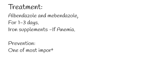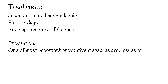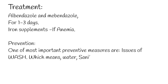Prevention: one of the most important preventive measures is WASH — water, sanitation, and hygiene. The reduction of open defecation is important, as is stopping the use of human waste as fertilizer. Additional measures include food hygiene, wearing shoes, regular deworming of pets, and the proper disposal of their feces.